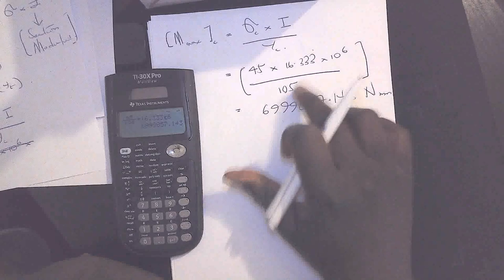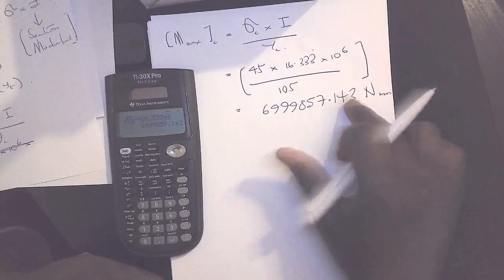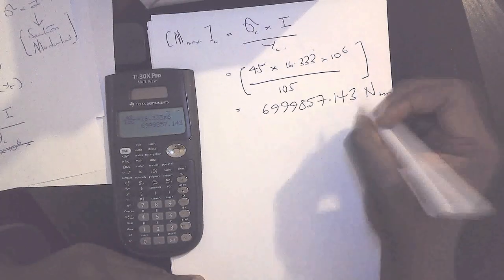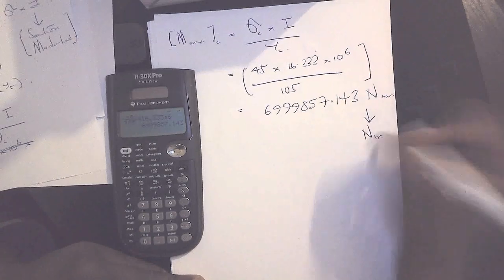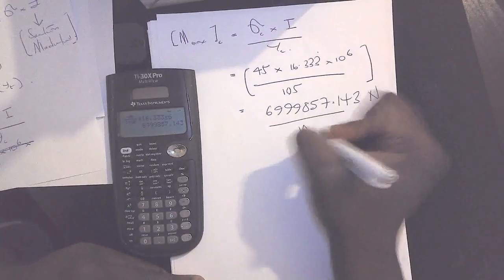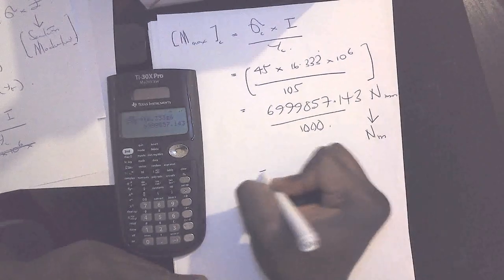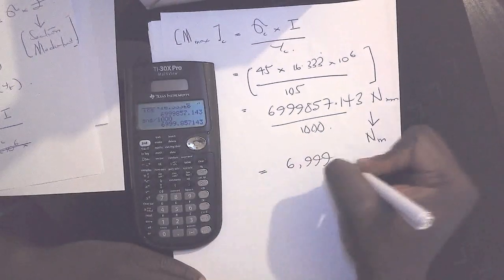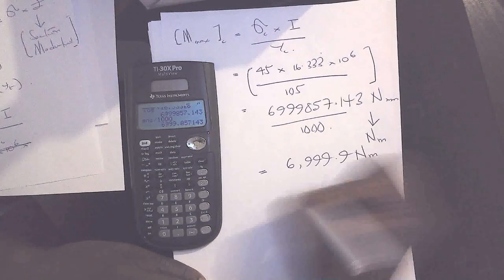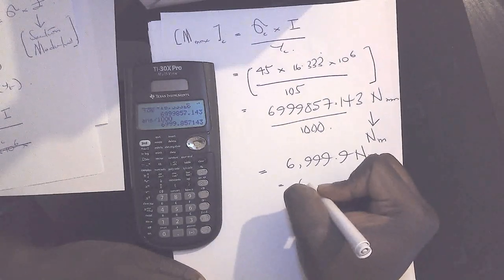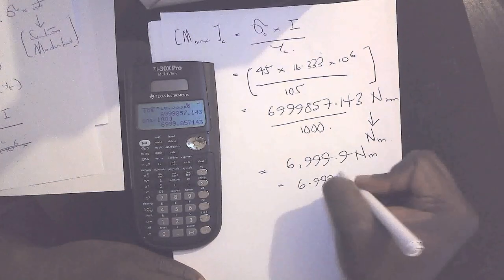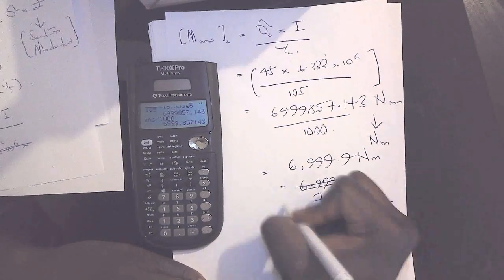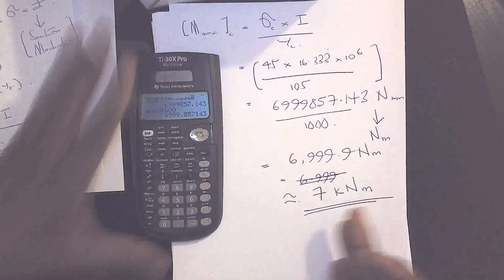That's equal to 6,999,857.143 newton millimeters, and this is where we need to be very careful. The basis that we're calculating in is in millimeters, so since in terms of the SI unit we want our value to be in newton meters, then we need to divide this value by 1000 to make that conversion. Once we do that, divide that by a thousand, this gives us 7 kilonewton meters approximately.